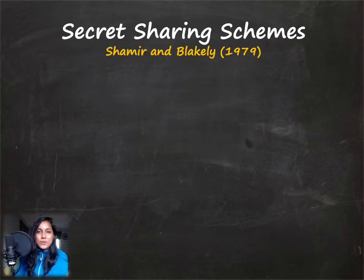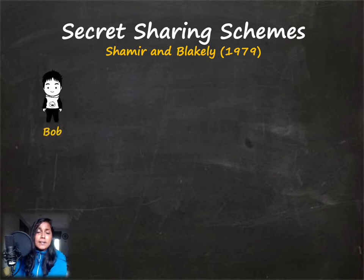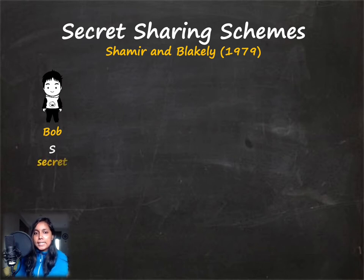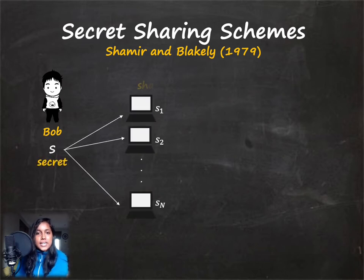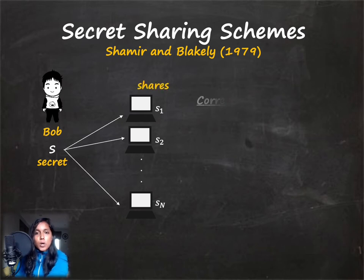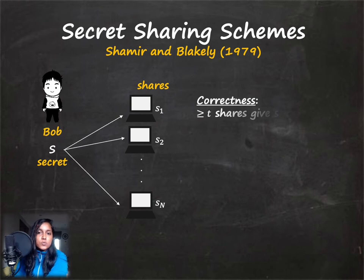What are secret sharing schemes? They are really cool primitives introduced by Shamir and Blakely in 1979. Here Bob has some secret S which he doesn't want to store entirely at the same location, so instead he splits it into N parts S1 through SN, which are called shares.